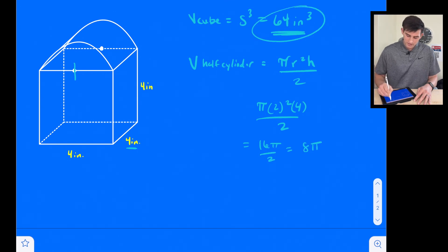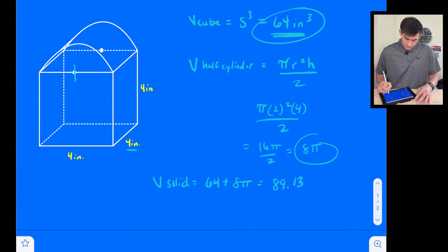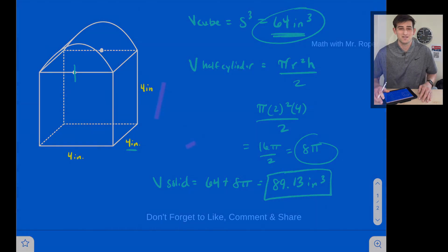So now we need to do 64 plus 8π to find the volume of our solid. 64 plus 8π, and that gives us a volume of 89.13, and we're working with cubic inches. And that is how you find the volume of composite solids.